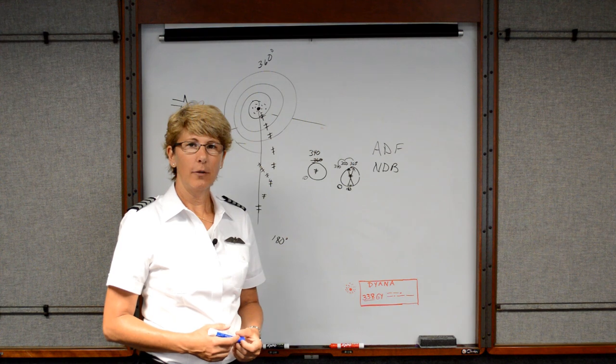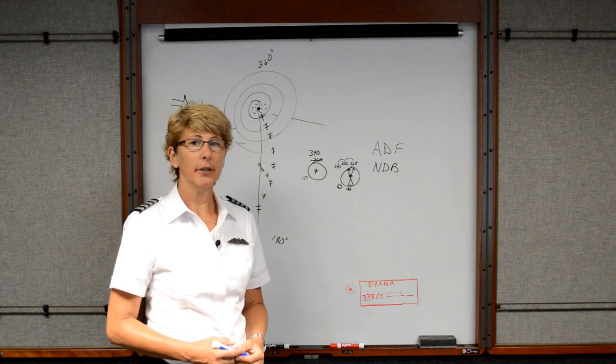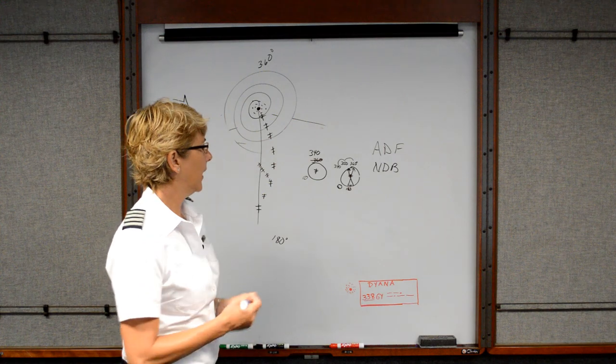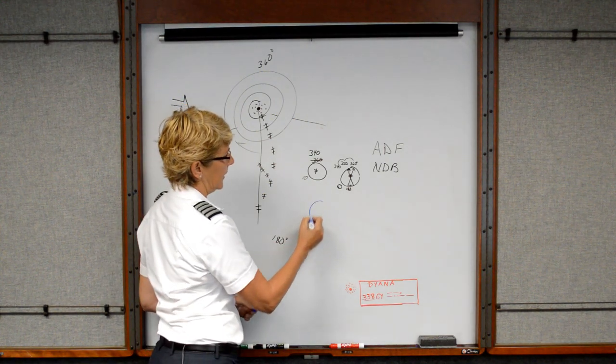The instrumentation you're more likely to find in more modern aircraft, particularly a glass cockpit, are RMIs. And how this works is you're on your heading indicator.